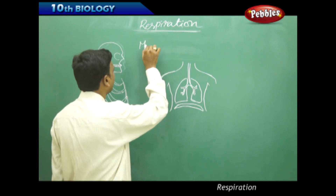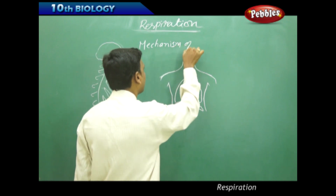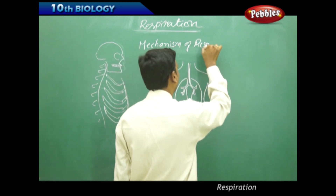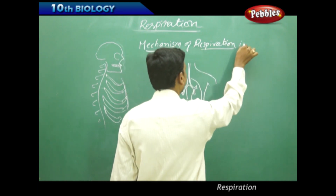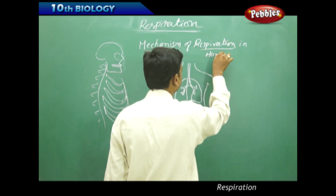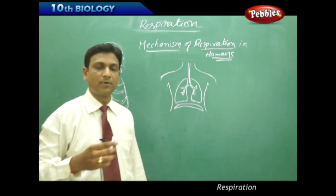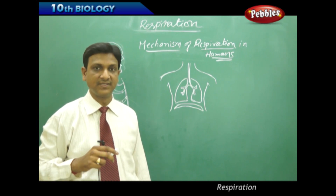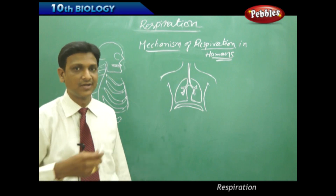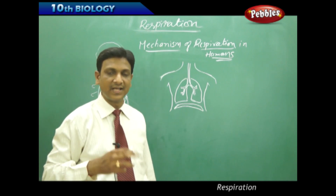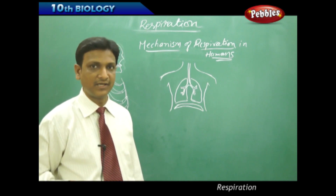Now, let us see the mechanism of respiration in humans. The process of respiration involves two major steps: inhalation and exhalation. We are talking about the physical external respiration, that is breathing. It has two phases — inhalation and exhalation — taking the air in and leaving the air out.